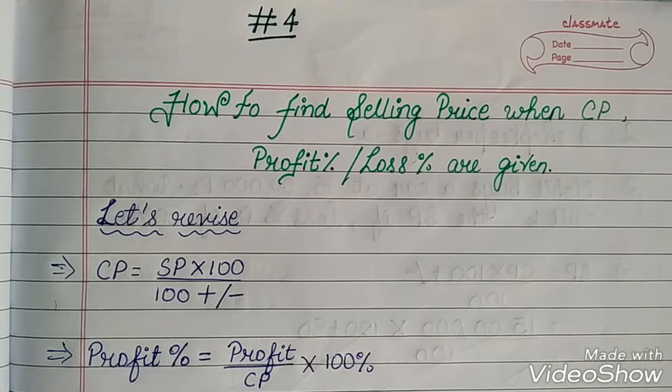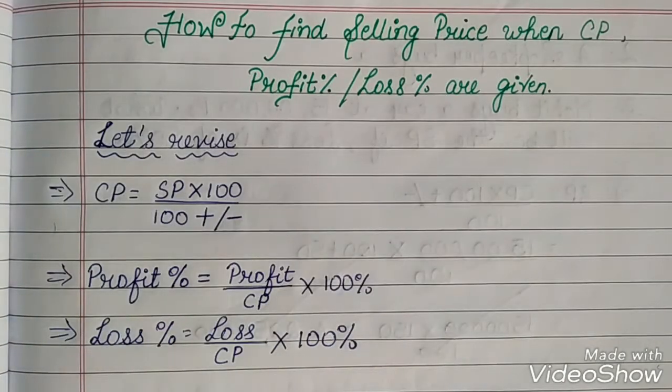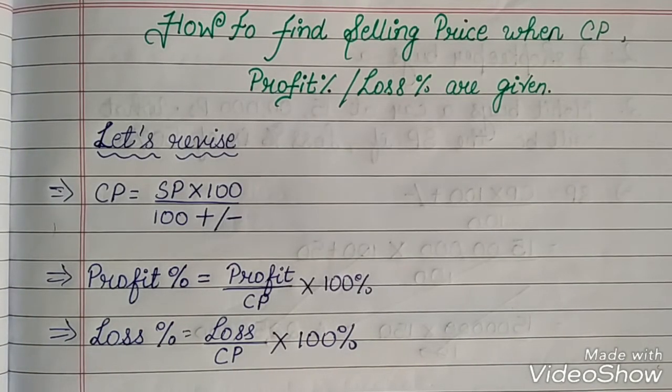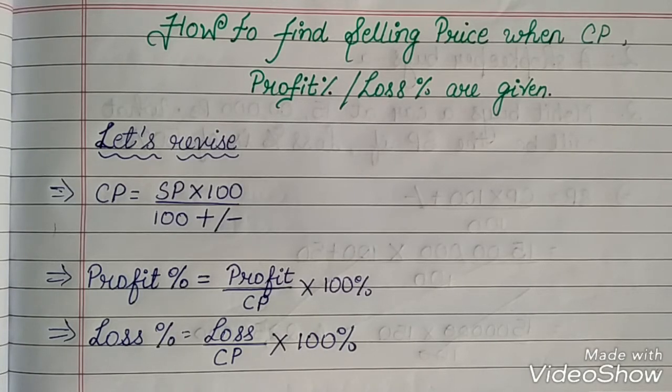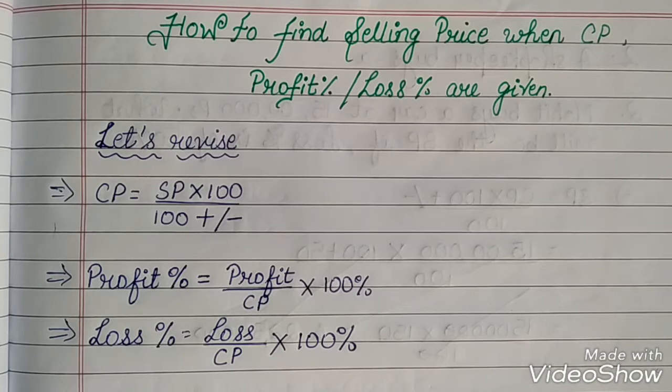First is how to find cost price. The formula is CP multiply into 100 divided by 100 plus or minus. If it is profit, then you have to plus. And if it is loss, then you have to subtract.